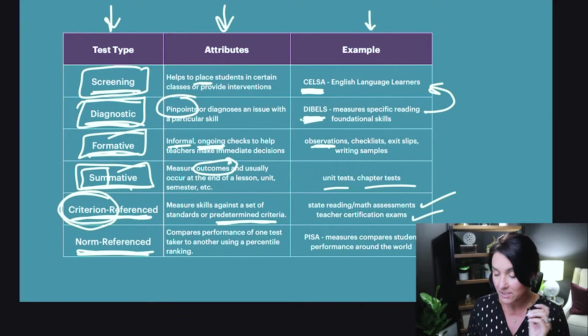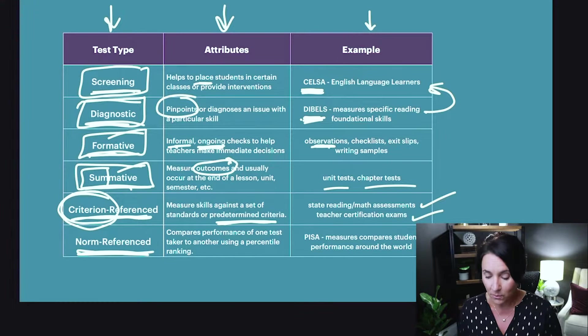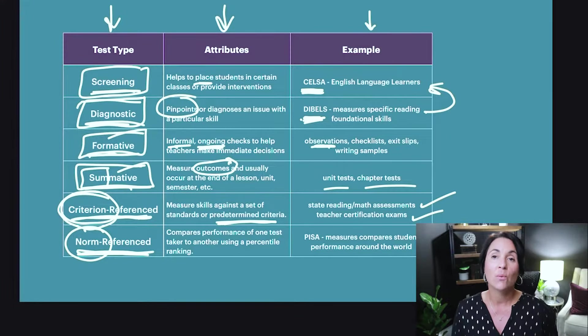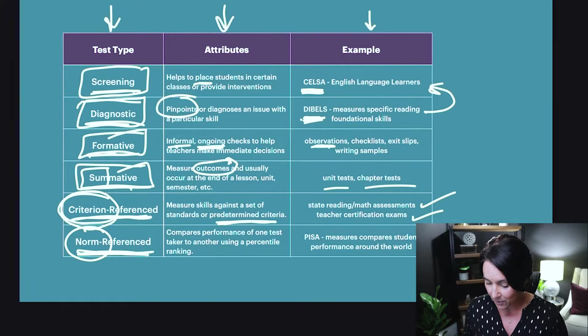The last type we're going to talk about today is norm-referenced exams. Norm-referenced exams measure the norm — what I like to call the bell curve. They compare students against other students, schools against other schools, districts against other districts, or even countries against other countries. They are usually expressed in a percentile ranking. If you're in the 90th percentile, that means you scored at or above 90% of the people who took the exam. If you're in the 20th percentile, you only scored at or above 20% of test-takers.